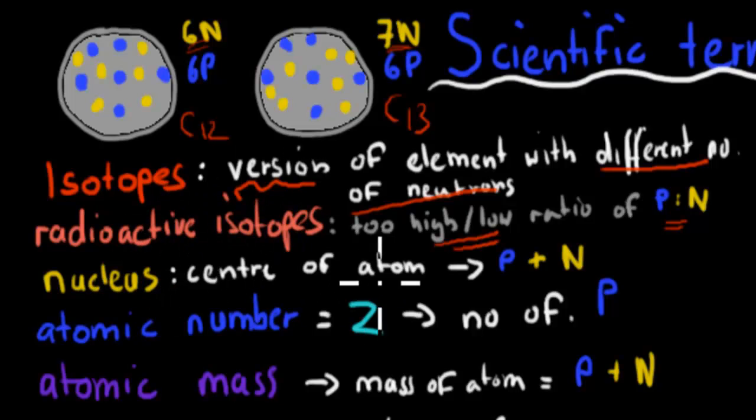We've got a nucleus, which is the center of an atom. So this nucleus has both our protons and neutrons in it. Atomic number, or Z for short, is number of protons. So the atomic number would be 6 for these ones up here. That makes it carbon as the element.